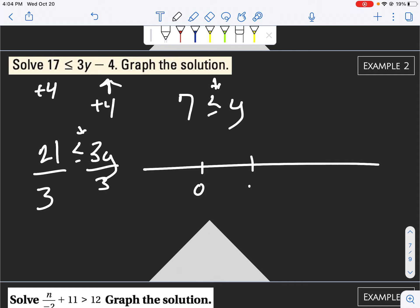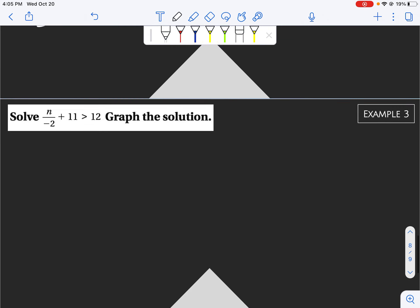Now we need to go 0, 5, 10. So 7 would be right about here. And we have a closed circle because we're equal to. So 7 is less than or equal to y. That means 7 is the smallest number that y could be. So our arrow should be going in the positive direction.